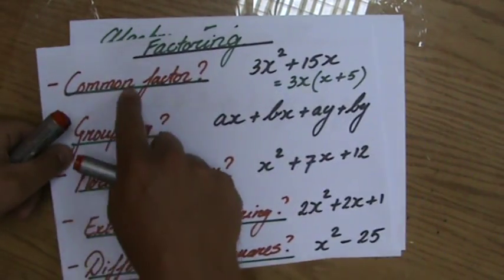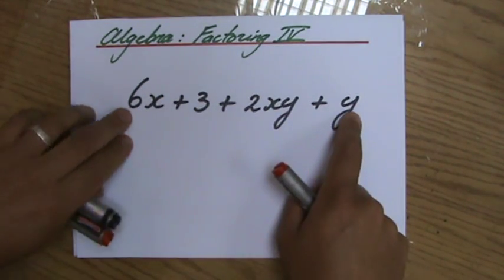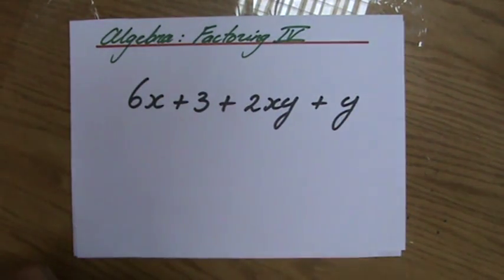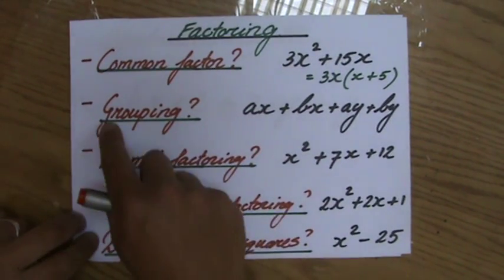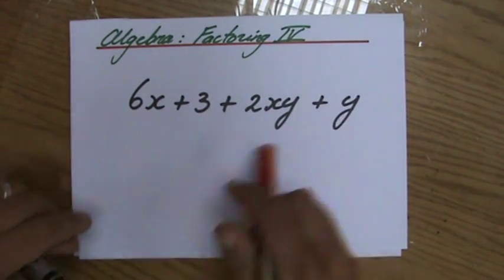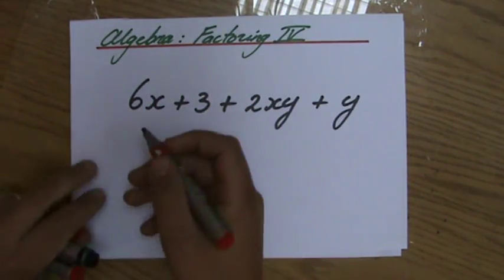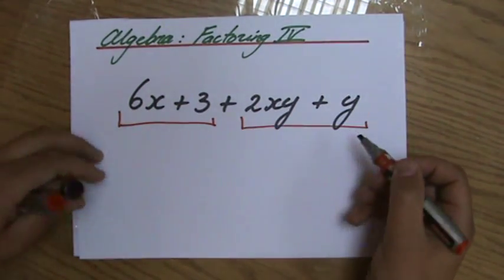Because that is always the first question you ask yourself: is there a common factor? Well, do all the four terms have a common factor? No, they're not. So the second question you ask yourself always when factorizing: can I do it by grouping? And by grouping, you need four terms. And yes, you can do it by grouping. What do you do? This is group 1, and that is group 2.